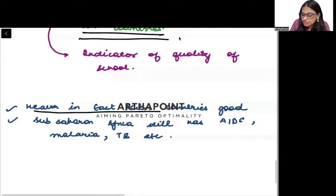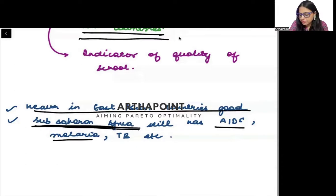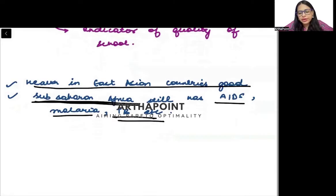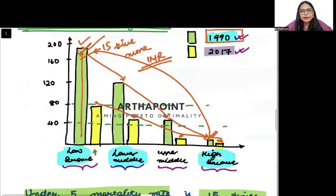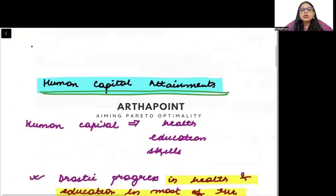Health in East Asian countries has overall improved, but sub-Saharan Africa still has many health issues like AIDS, malaria, TB, etc. The health condition there has not improved completely and remains a major problem. This is the second key difference between countries — that countries can be differentiated on the basis of health and education.